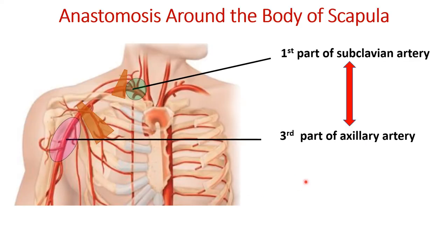Let us look at the anastomosis around the body of the scapula and which two arteries' branches are involved. Here we can see the arch of aorta on the right side, the brachiocephalic trunk, and the right subclavian artery. The right subclavian artery is divided into three parts by the scalenus anterior muscle. The first part is proximal to the scalenus anterior, the second part is deep to it, and the third part is distal to it.